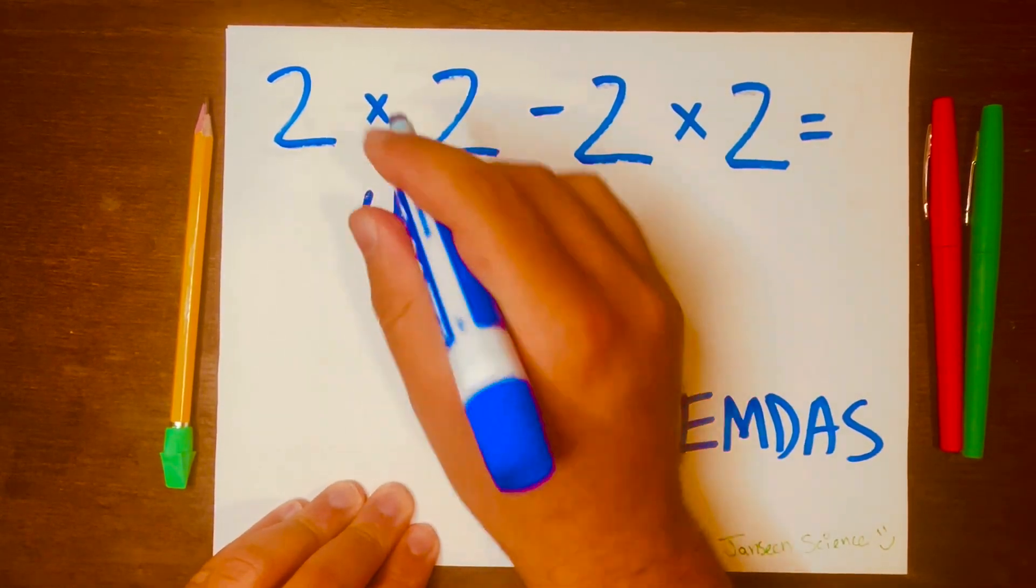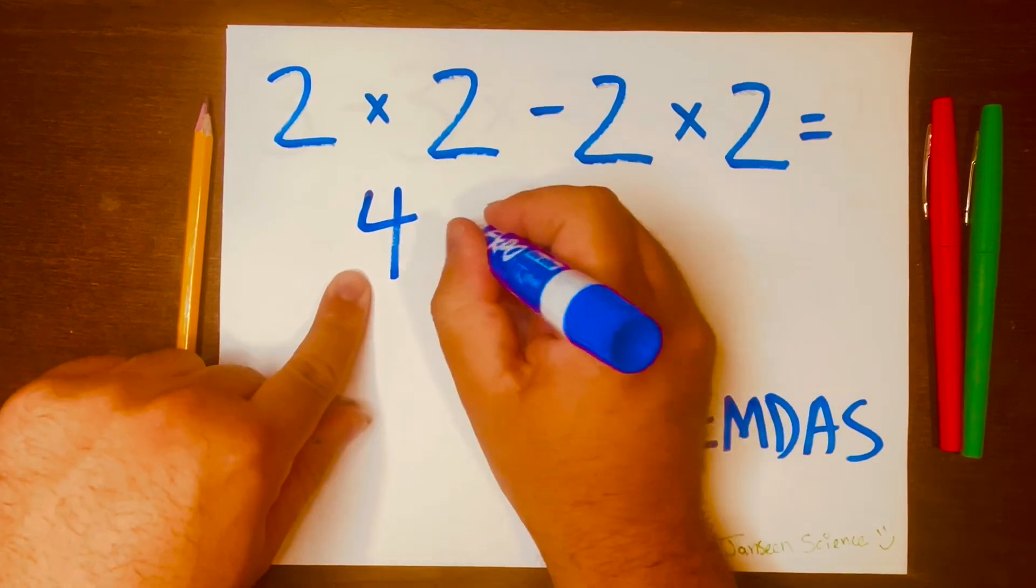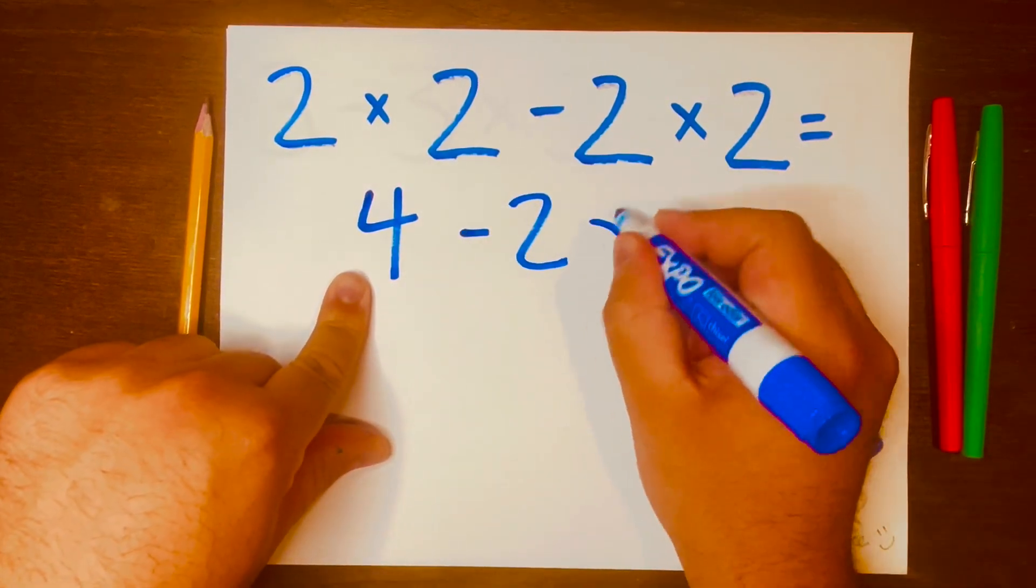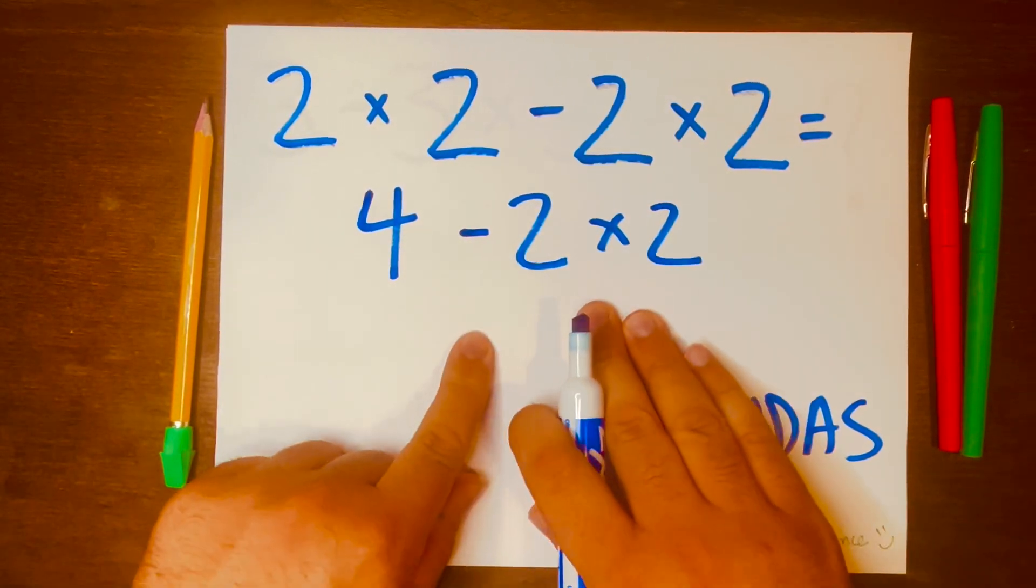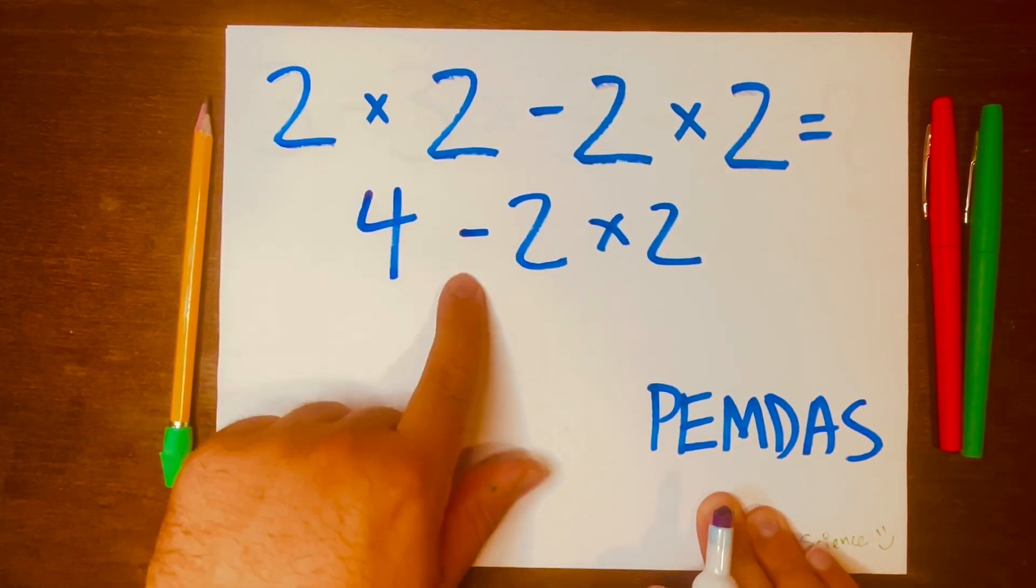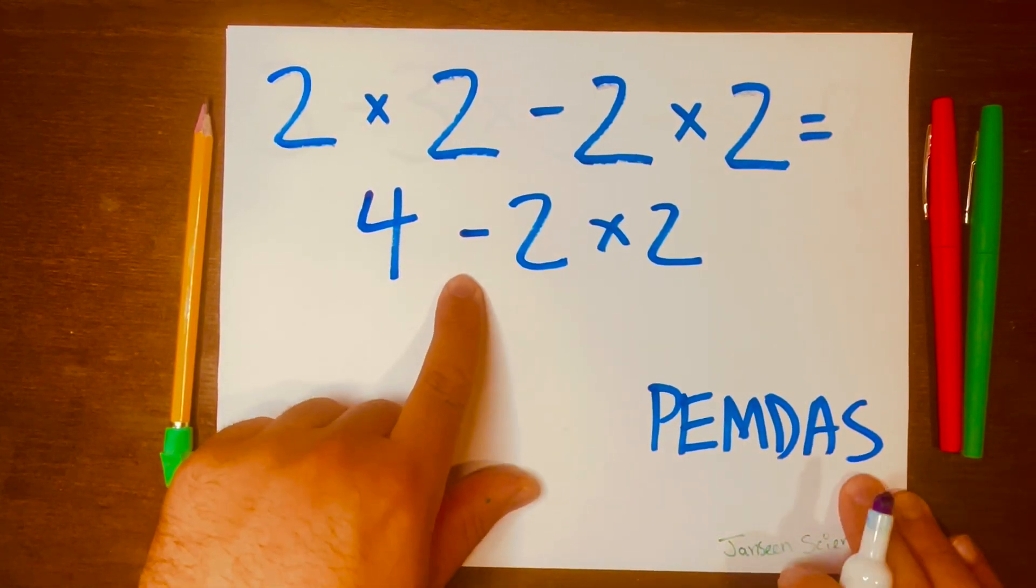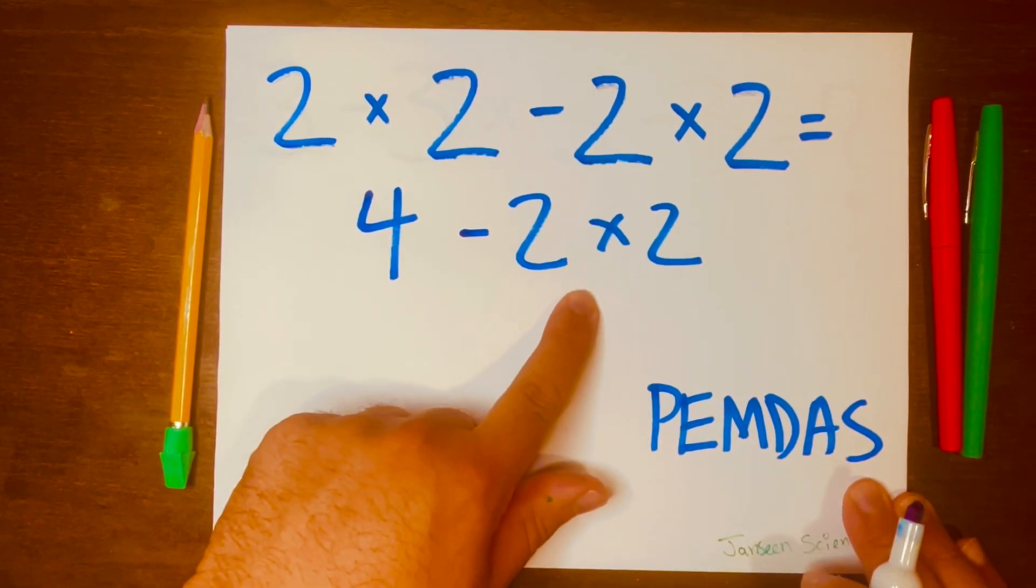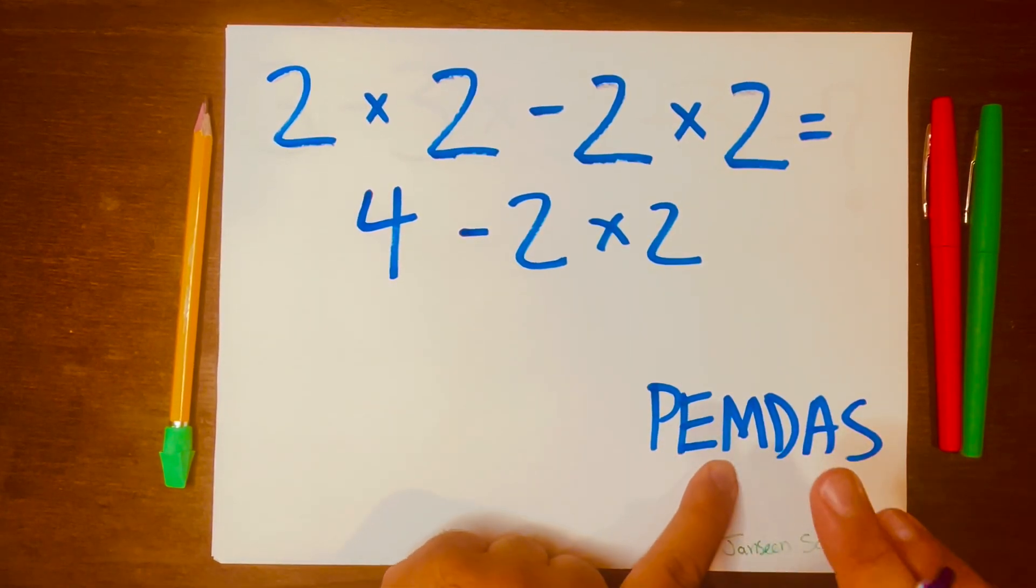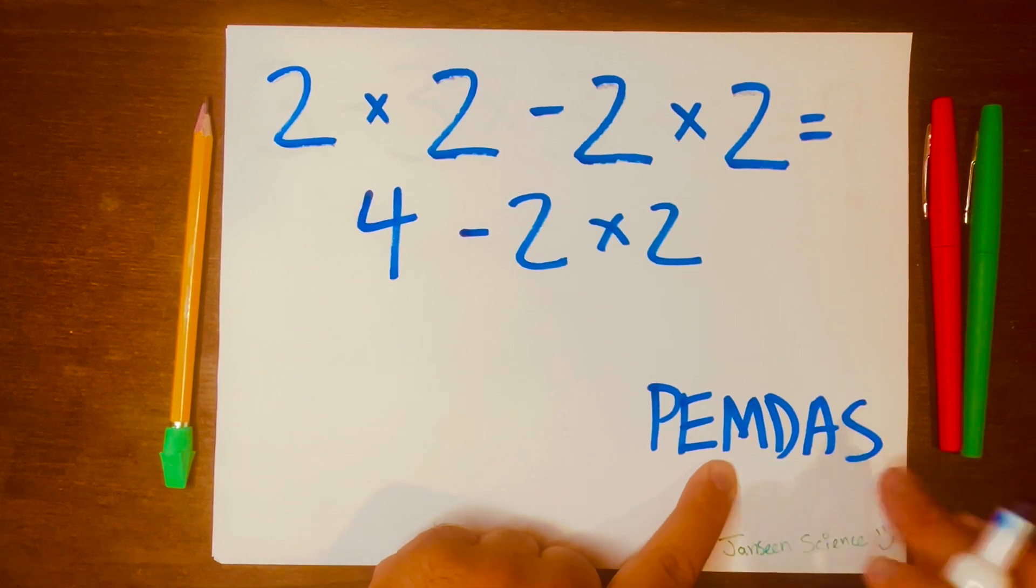So two times two is four, then I bring everything down just like that. Now again we read from left to right. Subtracting is a lower level and multiplication is a higher level, so multiplication is higher than subtracting.